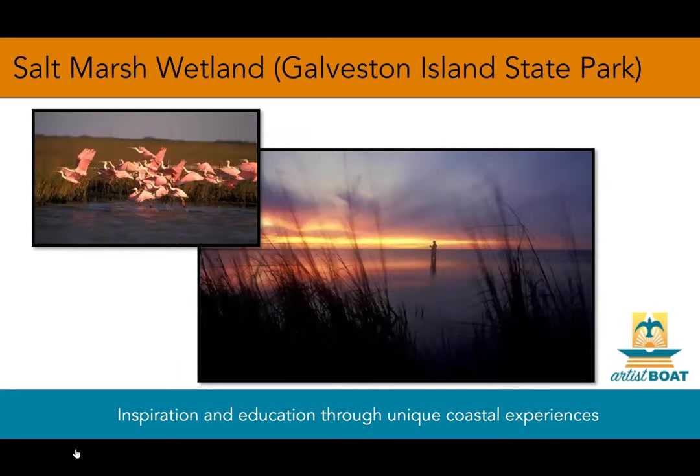Salt marsh communities are found in high salinity areas along protected estuarine shorelines. Prevalent species in the salt marsh community include smooth cordgrass, saltwort, saltgrass, and glasswort. Smooth cordgrass, found in the intertidal zone, dominates the low salt marsh community — the portion of the marsh most frequently inundated by bay waters.